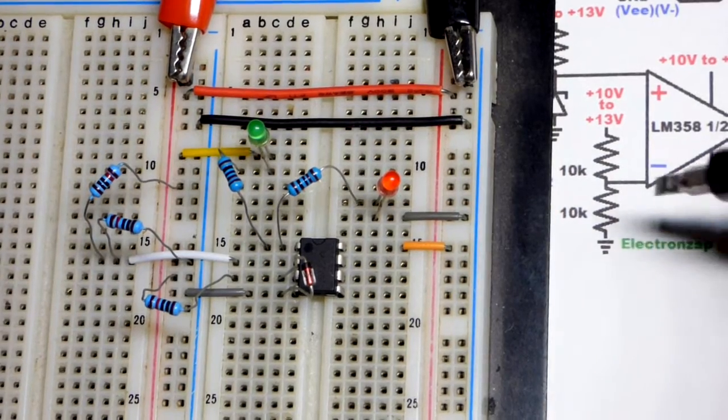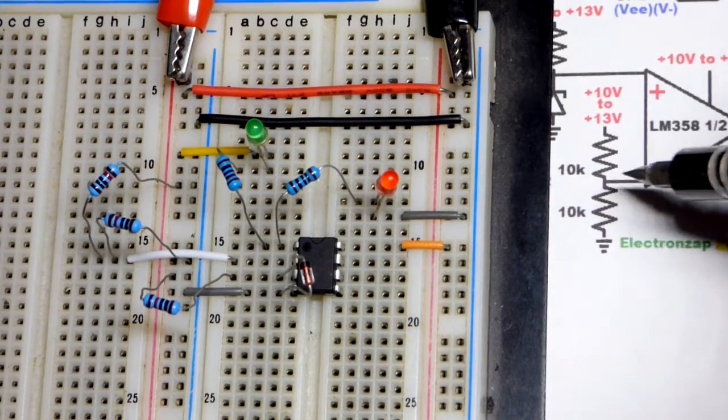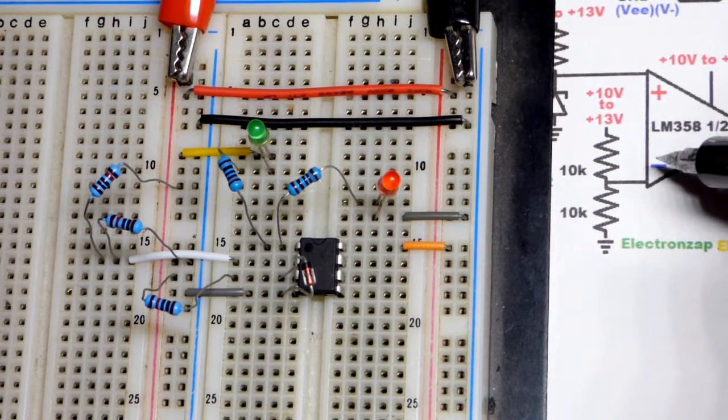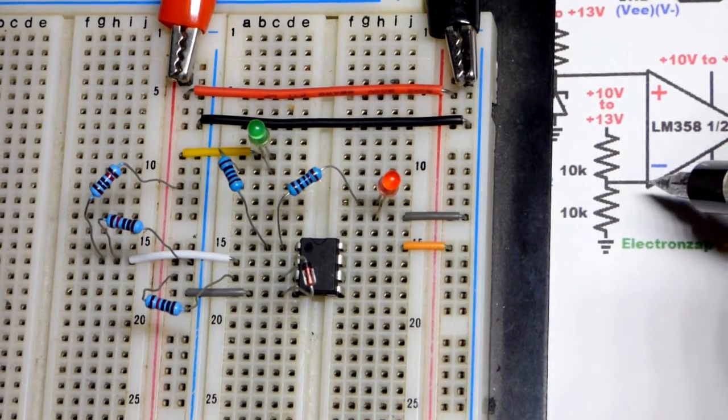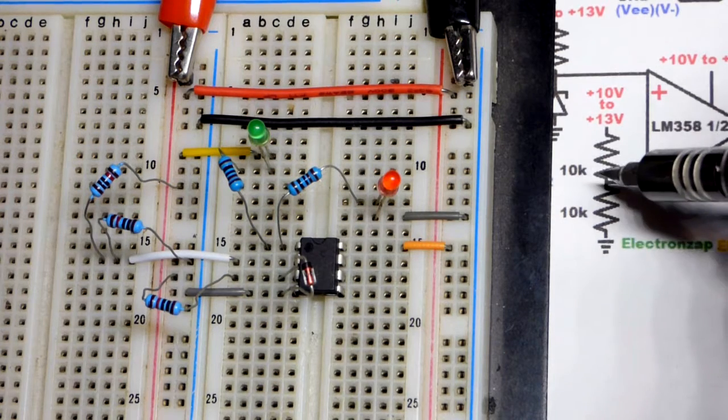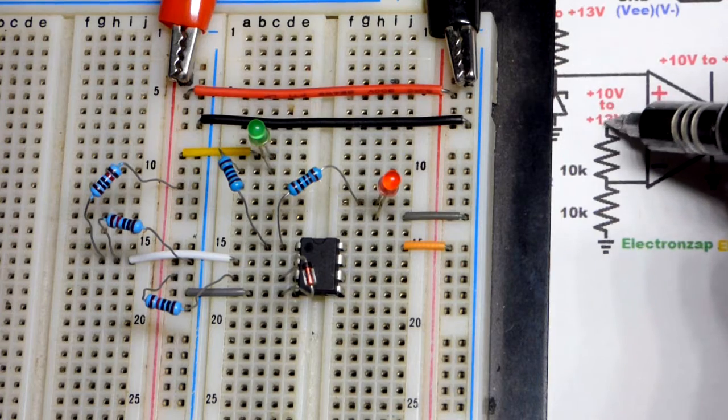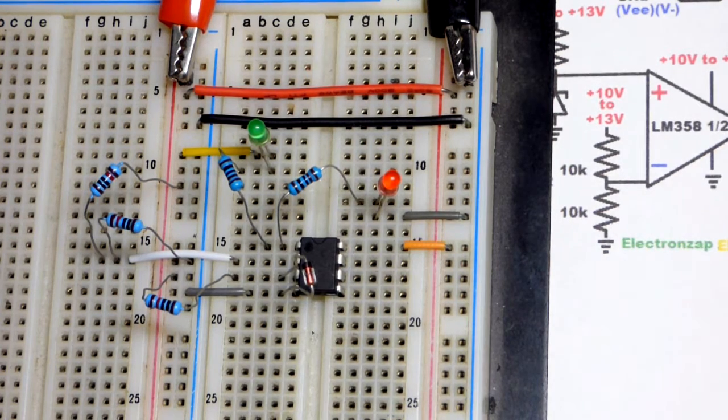Our signal voltage is half of the supply voltage. Our signal voltage is going to the inverting input. Since the signal is going to the inverting input this is an inverting comparator. But in any case we're using two equal value resistors, 10,000 ohms works well. So you'll get half of the supply voltage to the inverting input there.